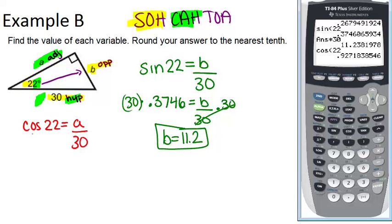And it's approximately 0.9272. And again, I'm going to multiply both sides by 30 in order to get the A by itself. So I'm going to leave my answer in the calculator over here and just multiply by 30.